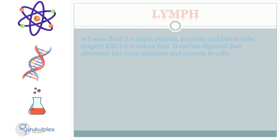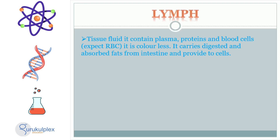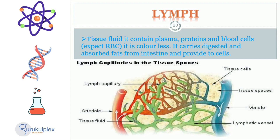Tissue fluid is a colorless liquid that exists in between cells, aiding in the transportation of oxygen, nutrients and molecules throughout the body. Primarily consisting of plasma, proteins and blood cells, it does not contain red blood cells. This liquid occupies a crucial position in the body, responsibly carrying digested and absorbed fats from the intestine to other cells, subsequently providing them with necessary nutrients.